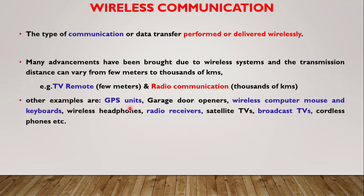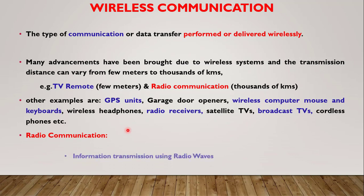Other examples of wireless communication systems are GPS units, garage door openers, wireless computer mouse and keyboards, wireless headphones, radio receivers, satellite TVs, broadcast TVs, cordless phones, etc. All these things work wirelessly and for that purpose they use radio waves. So we can say this kind of communication is radio communication, and this radio communication happens with the help of waves called radio waves.